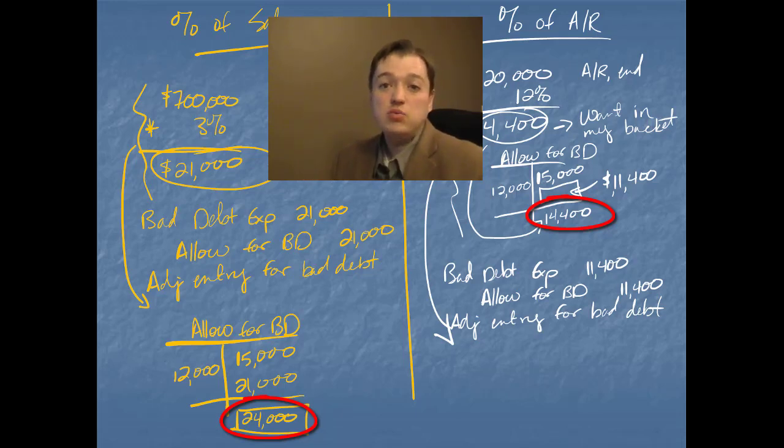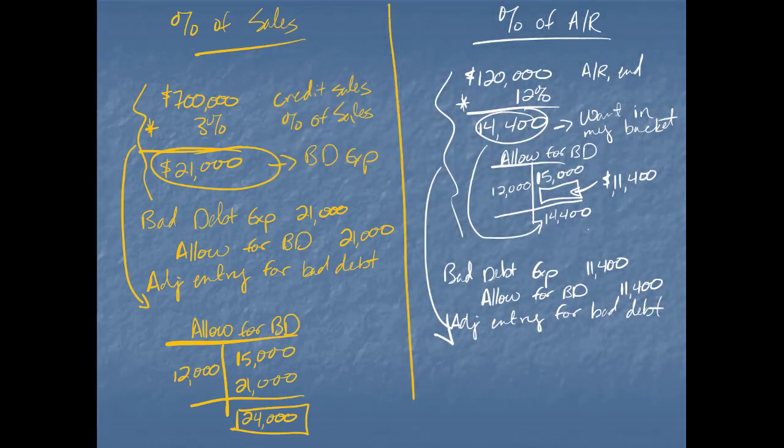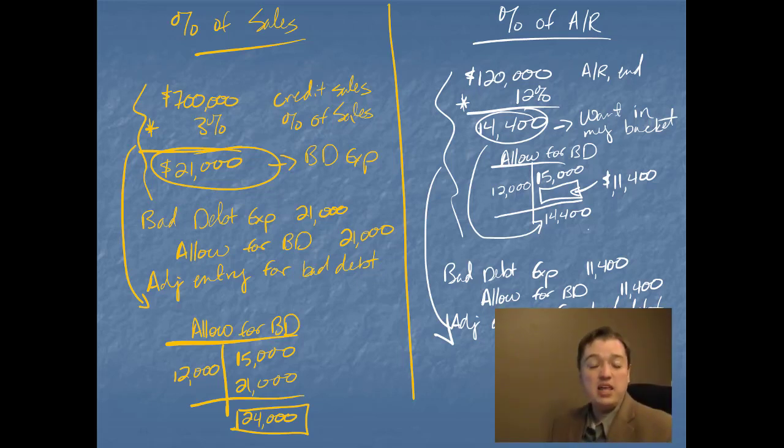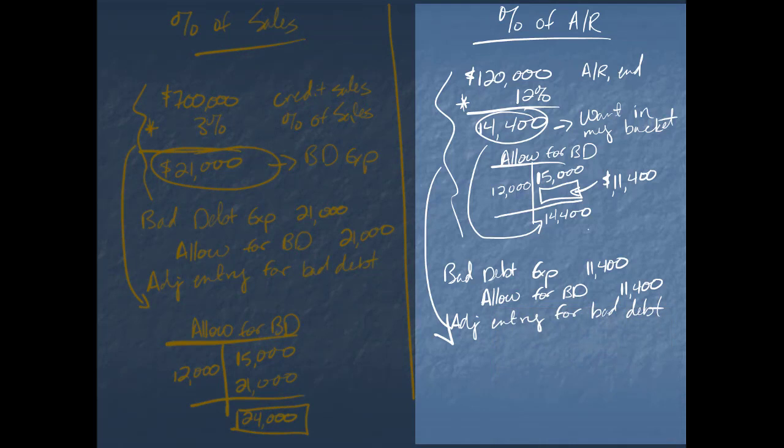Which is more accurate? Well, we tend to think in terms of being conservative. And we'd say, oh, well, that percent of sales method is more conservative. But the truth is, with the percent of sales, I've already collected a lot of that money by the end of the year. I mean, some of these people bought their stuff back in January, February. By December, yeah, I've got that money. So it turns out that the percent of accounts receivable method is much more accurate, because I'm focusing my attention on what people still owe me, not on what they've owed me all year long. So it becomes a much better estimate.